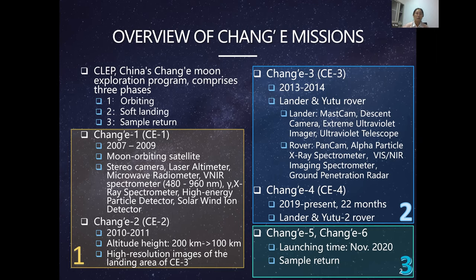Both missions were completed successfully. The Chang'e 1 orbiter operated for one and a half years. Chang'e 2 finished its lunar orbit work and then had a follow-up task of imaging the asteroid Toutatis. The orbital altitude of Chang'e 2 was lower than Chang'e 1, so the spatial resolution of its data is slightly higher.